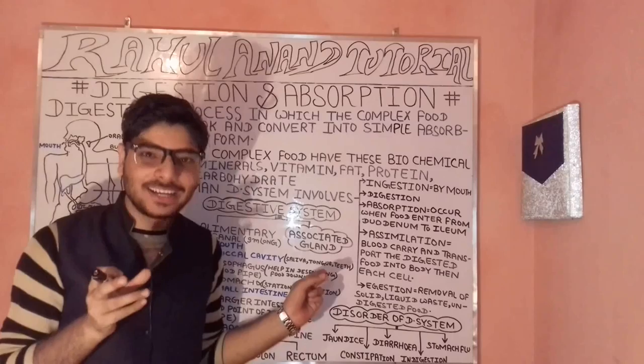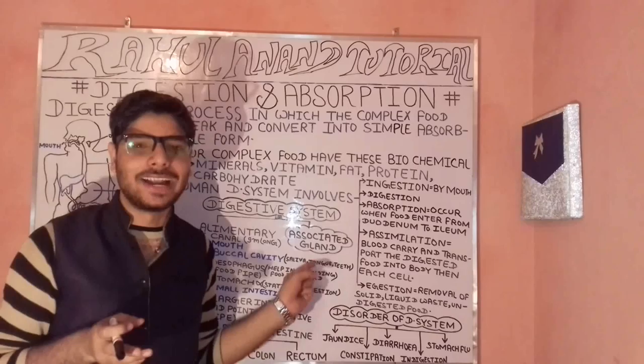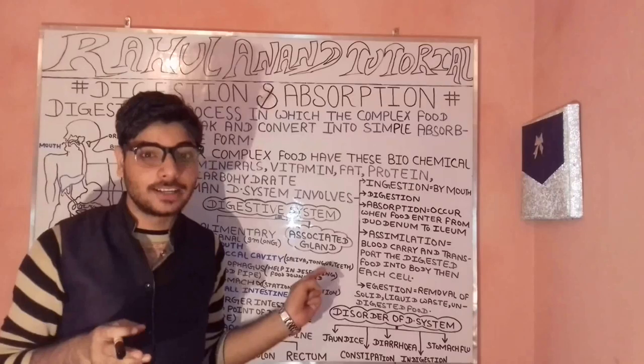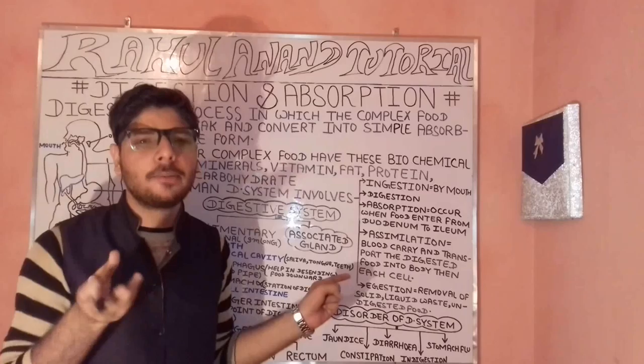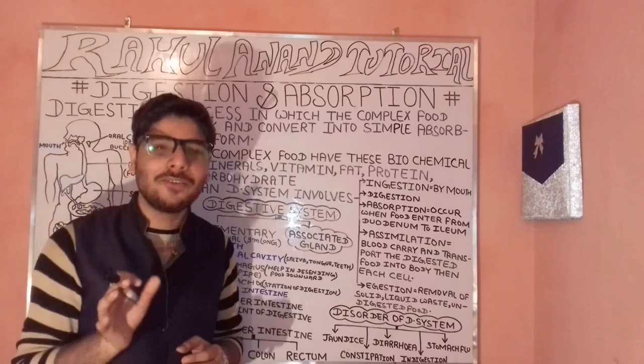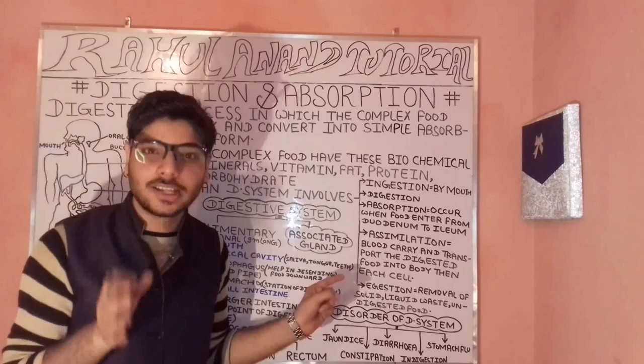Teeth play an important role in breaking down complex food, and are divided into incisors, canines, molars, and premolars. The salivary glands secrete saliva containing enzymes. Enzymes play an important role in increasing or decreasing the rate of reaction without being altered overall.